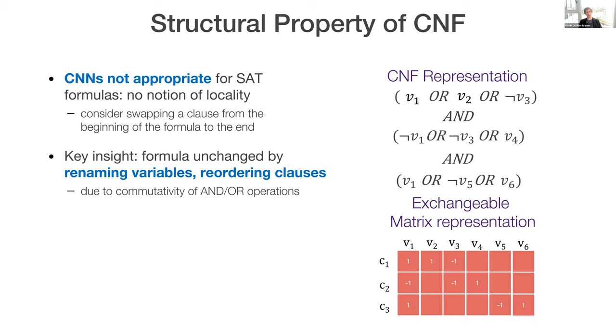So, what would be the right structural property for us to impose on a SAT formula represented in conjunctive normal form? Well, convolution would not be appropriate for SAT because there isn't a notion of locality, right? Convolution says, when you're looking for a picture of a puppy, you only have to look at the pixels that are all close together. And when you slide them around, it's the same picture. Well, with a SAT formula, you can sort of garble it all around and get the same SAT formula. So, locality is not the important thing. So, in SAT, the key insight is that the formula is unchanged by renaming variables or reordering clauses, because the AND and OR operations in the CNF are commutative. So, we want to say that the input to a SAT formula should be represented as an exchangeable matrix.